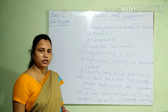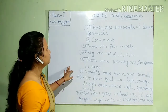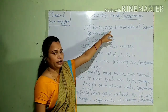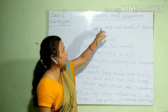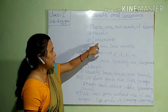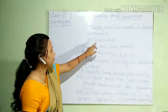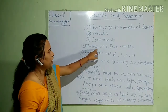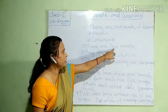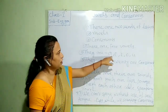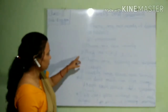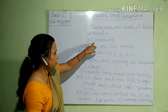So children, what do we learn from this lesson today? We learn that there are two kinds of letters. What are they? There are vowels and consonants. There are five vowels. How many vowels? Five vowels. What are they? They are A, E, I, O and U.